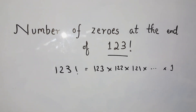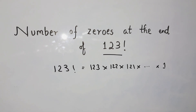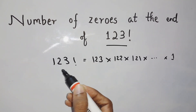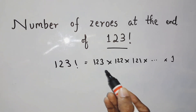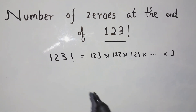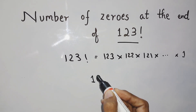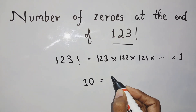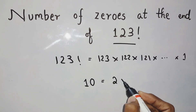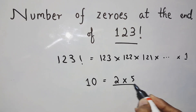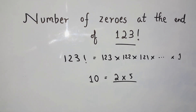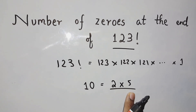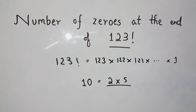To find the trailing zeros at the end of this factorial is very easy. If a number ends with zeros, it must be divisible by 10. A number divisible by 10 means it has two factors: 2 × 5. So we have to find the maximum number of 2s and 5s dividing this factorial.